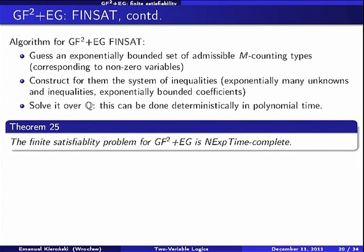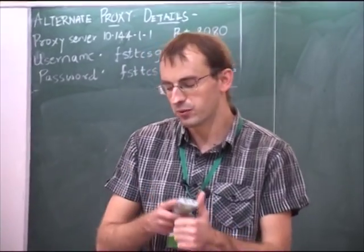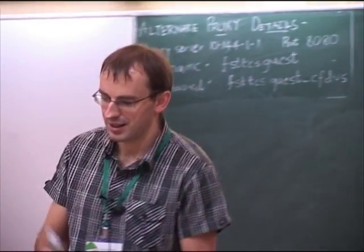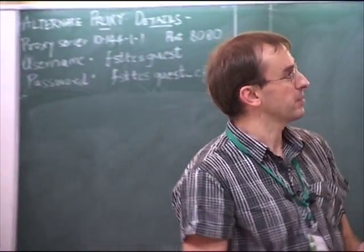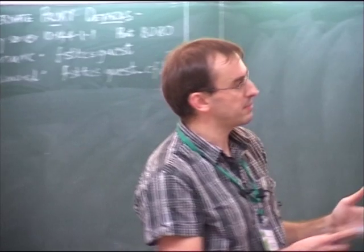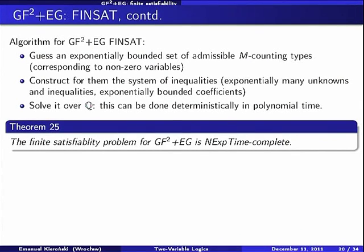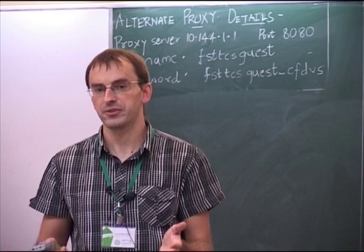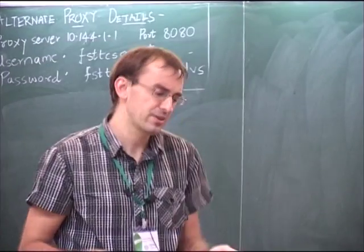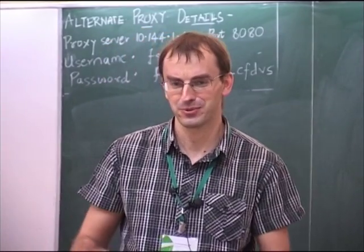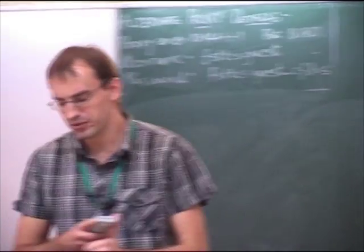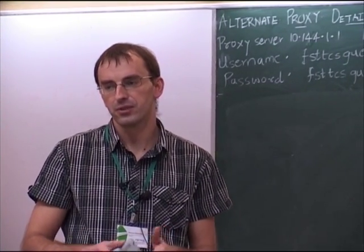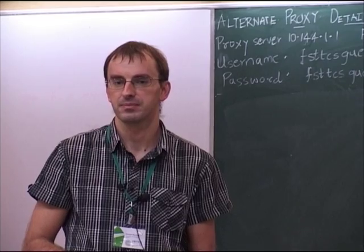Our algorithm: we guess which types and which variables will be non-zero in our solution — we guess the set of one-types and the set of m-counting types corresponding to non-zero variables. We construct the system using only those variables, giving a system with 2^n equations and 2^n variables. We solve it over reals in deterministic polynomial time. Since we already have a non-deterministic algorithm due to the guessing step, we finally guess an exponential amount of information, construct a system of equations, and solve it, all in exponential time.